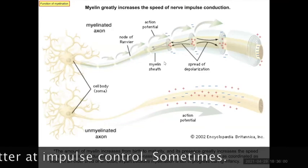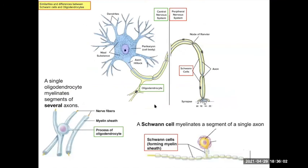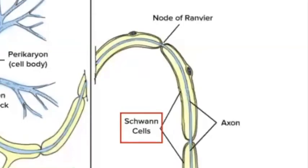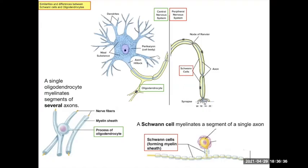All right, but again, oligodendrocytes and Schwann cells—oligodendrocytes in the central nervous system, and they might do—a single oligodendrocyte might do several axons. And then as you move out into the periphery, a single Schwann cell is just going to myelinate one axon, like a certain segment of one axon. The Schwann cell, when we get into it, is actually the so-called internode, and then the node is where the signal is going to jump.